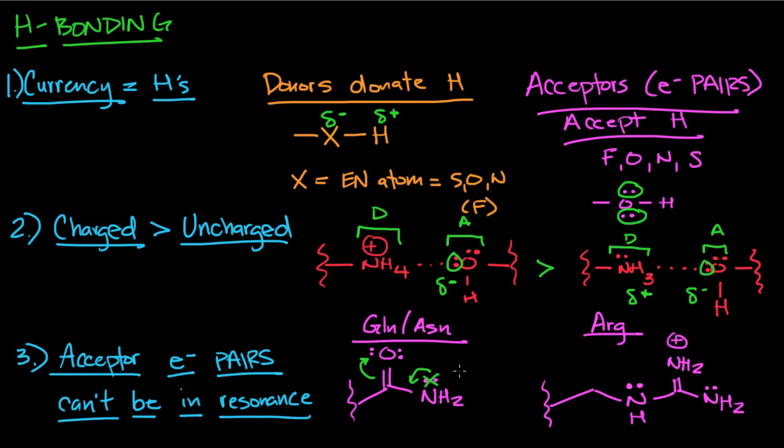Same thing with arginine. Both of these electron pairs on the adjacent nitrogens cannot participate in H bonding because they're in resonance. And when they're in resonance, they're not localized. They're not going to be available for H bonding.